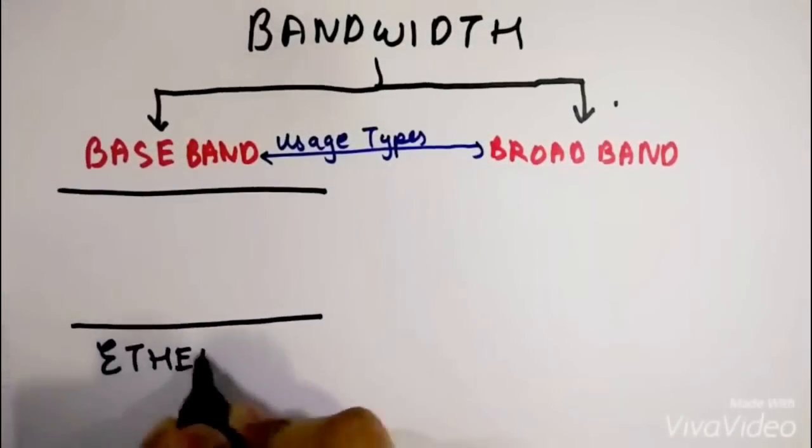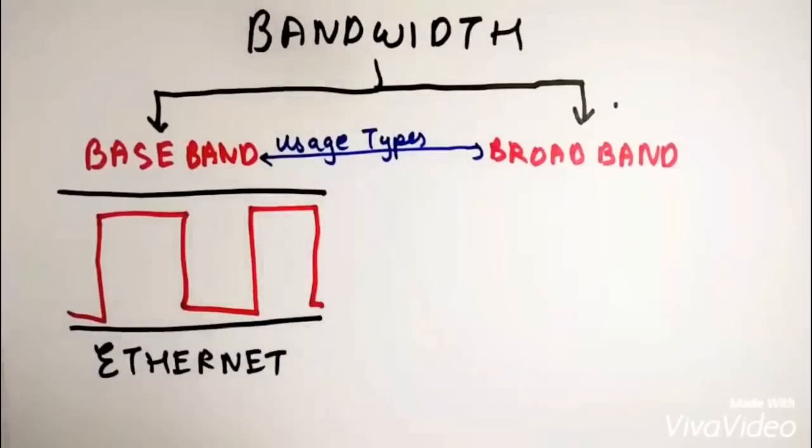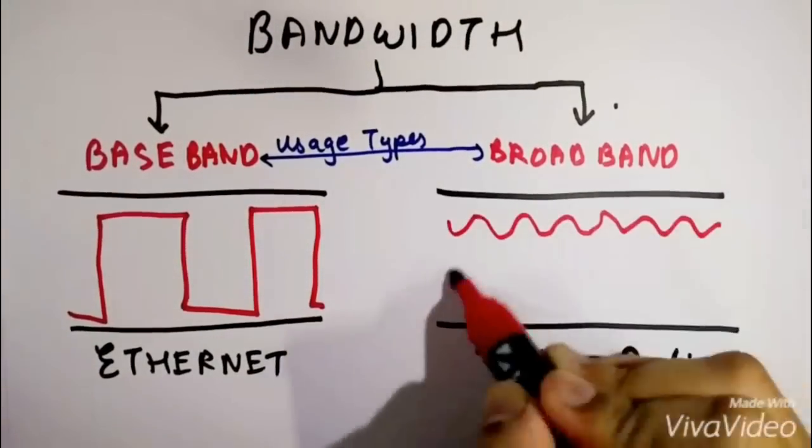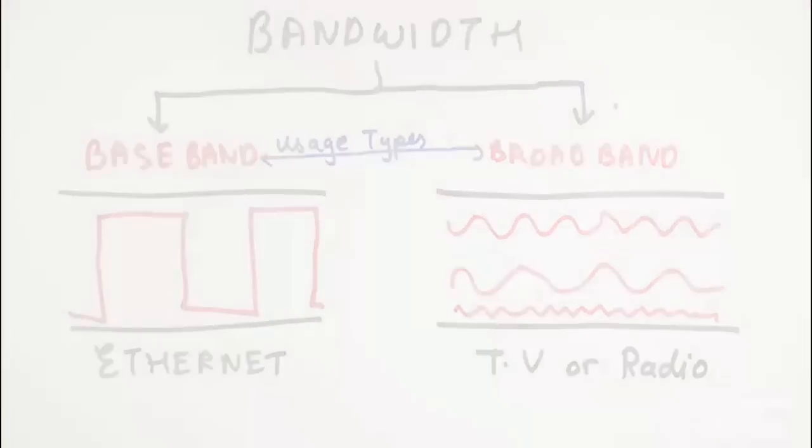Baseband which is used in Ethernet connections uses the whole band to transmit just one signal of information whereas broadband which is used in TVs transmits a number of signals through the whole band.